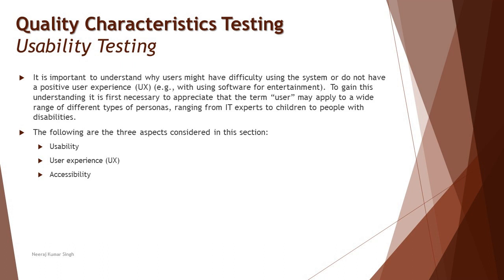Language is one attribute of user friendliness. It's important to understand why users might have difficulty using the system or don't have a positive user experience — that knowledge leads to building better user friendly products. The term 'user' may apply to a wide range of personas, ranging from IT experts to children to people with disabilities. User friendliness is measured in three parameters: usability, user experience, and accessibility.